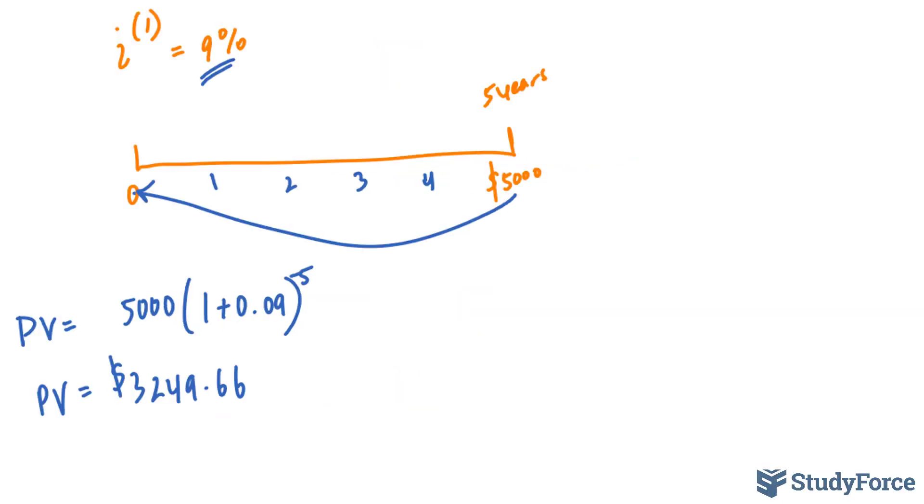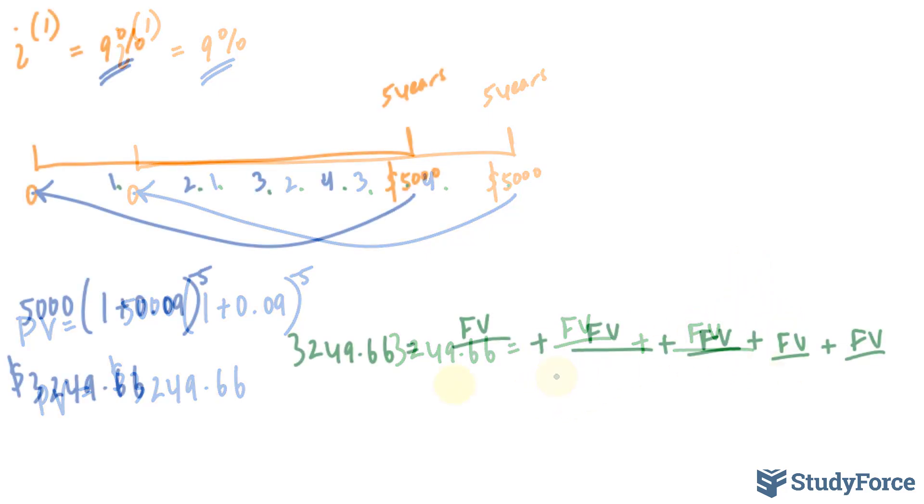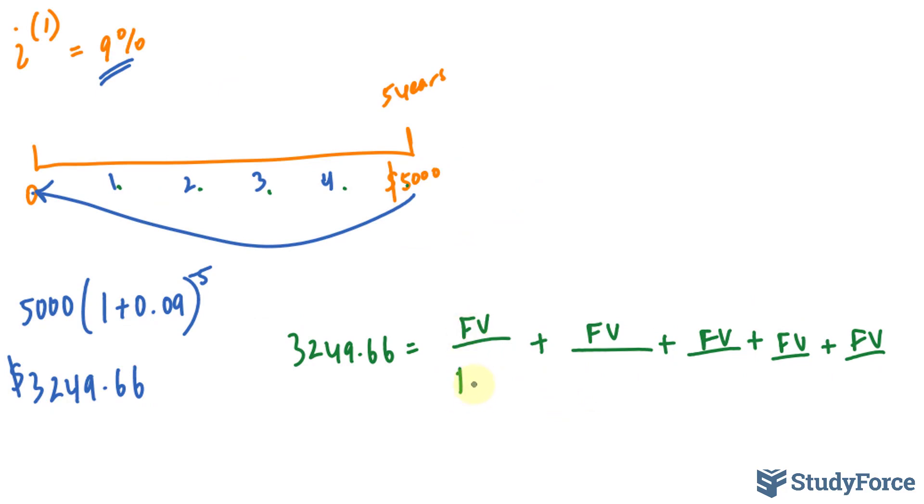Just like we did in question 1, we'll take this 3,249.66 value, and we're looking for a future value that when discounted 1, 2, 3, 4, 5 years, the present value that you get, their sum, gives us that amount. So the future value has to be the same for all of those payments.